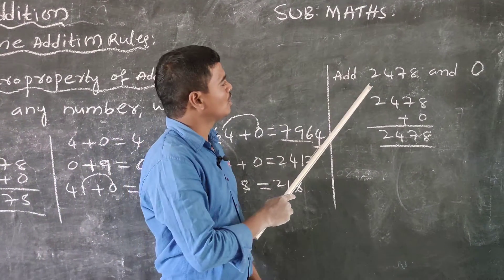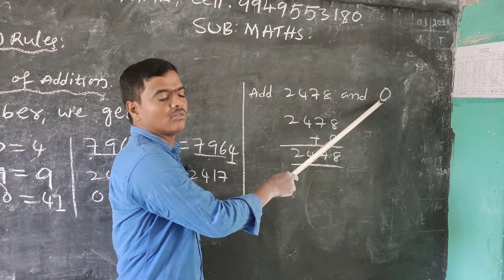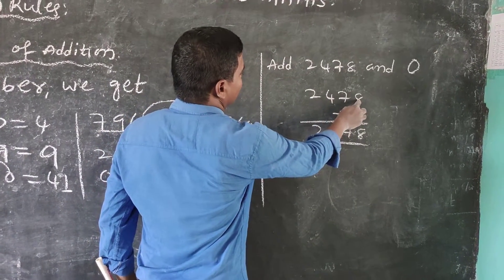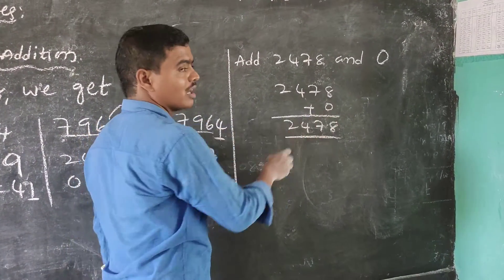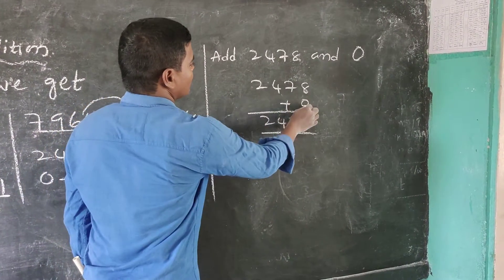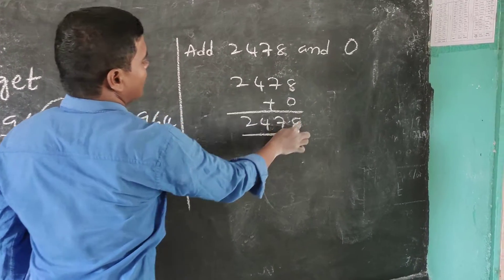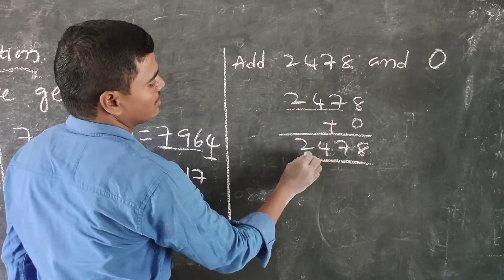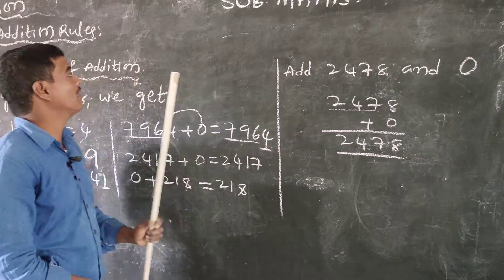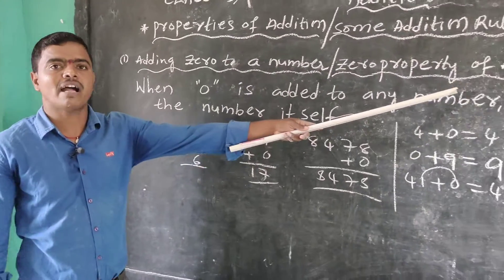Next example: add 2,478 and 0. So 2,478 plus 0. According to the Indian number system, we look at only one digit at the ones place: 8 plus 0 is equal to 8, and the remaining digits stay the same. This is the zero property of addition.